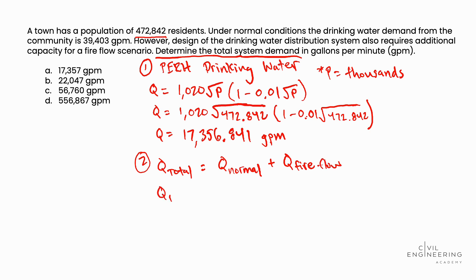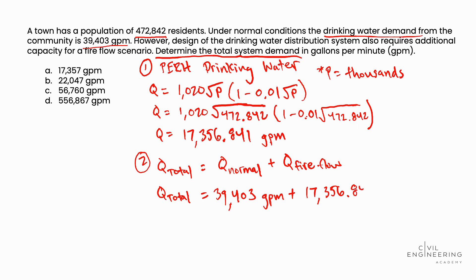To determine the total demand, Q_total equals Q_normal, the normal demand, which we're told in the problem statement is 39,403 gallons per minute, plus the fire flow demand we found in step 1, which was 17,356.841 gallons per minute. Performing the calculation, we determine that the total system demand is equal to 56,759.8 gallons per minute.